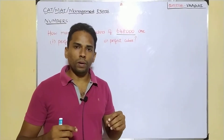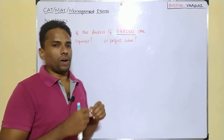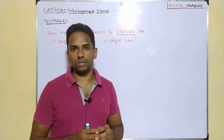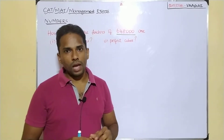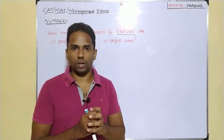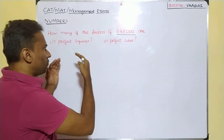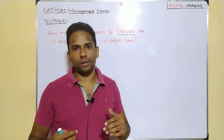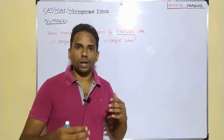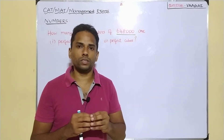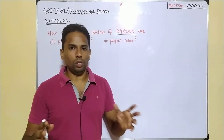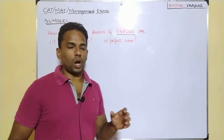We have already dealt with questions based on finding the number of factors, the number of odd factors, even factors, and the sum of factors. You can look at those older videos to get some basic idea. This kind of question appears very frequently in many management exams and also in other exams like RRB. Though the question appears very easy, it involves some technical steps to solve. Let's get into the approach.